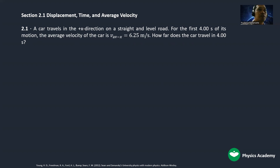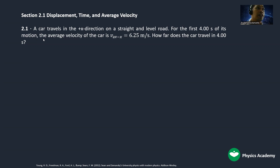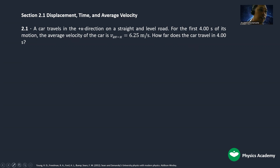In our problem, a car travels in the positive direction on a straight and level road. For the first four seconds of its motion, the average velocity of the car is given as 6.25 meters per second. How far does the car travel in 4.0 seconds?